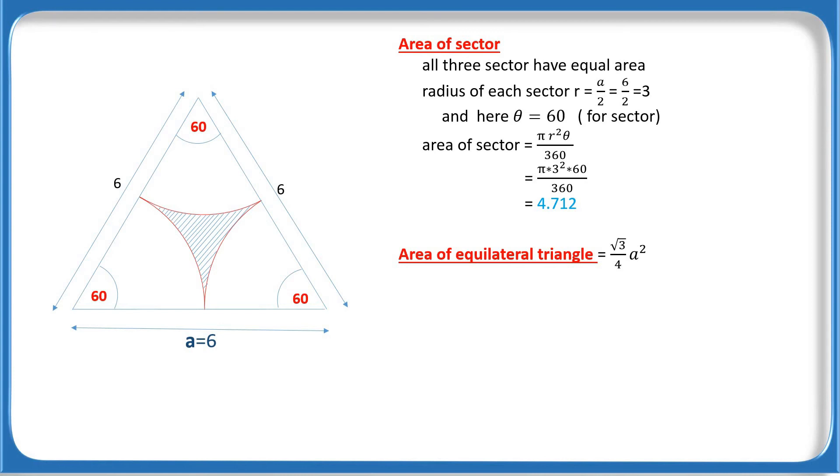Area of the equilateral triangle equals root 3 over 4 a squared, where a is the length of the triangle. Now put a equals 6 and calculate, it will be 15.588.